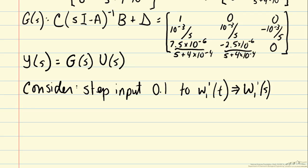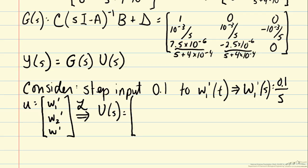We'll have w1 prime of s is 0.1, the height of the step, over s, since the Laplace transform of a step input is 1 over s. Our input u, recall, was w1 prime, w2 prime, and w prime. In the Laplace domain, U(s) is 0.1 over s, our w1 term, and then we have zero deviation in our other two inputs in this example.